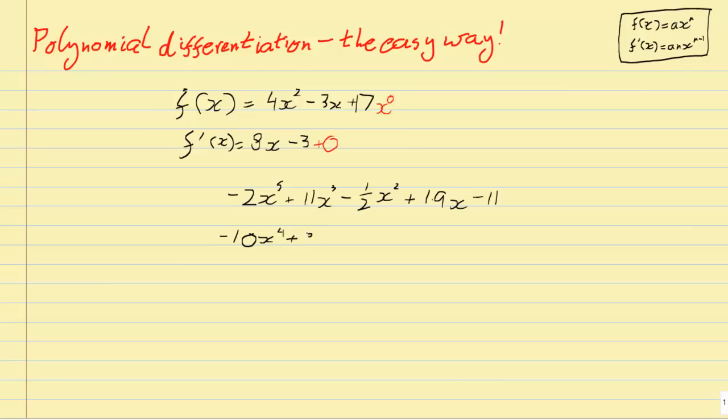11 times 3, 33. And then x to the power of 3 becomes to the power of 2. Now, negative 1 half times 2 is negative 1. And that just becomes minus x, we drop that power by 1.